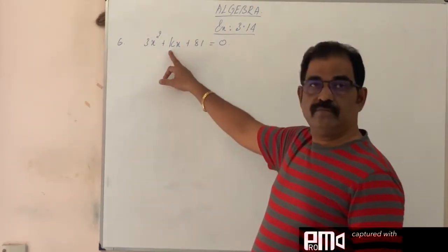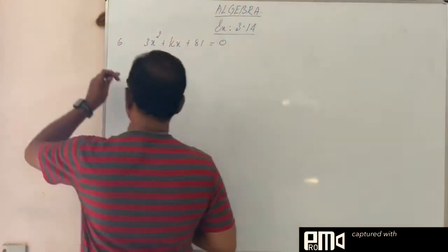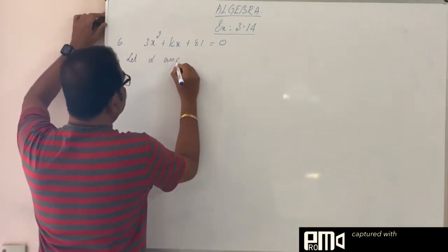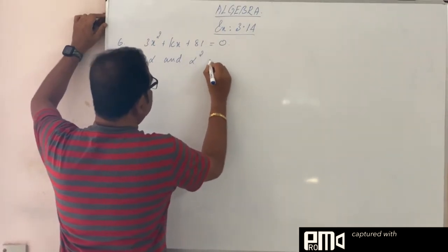Find the values of k. You see, so we are assuming like this: let alpha and alpha square be the roots.